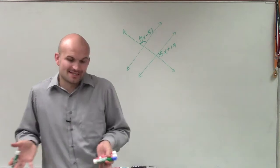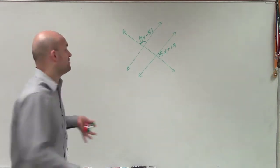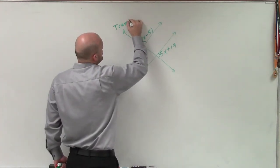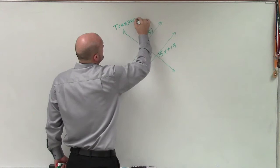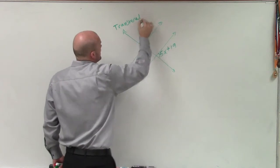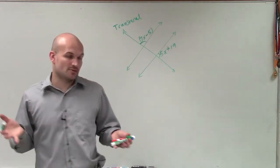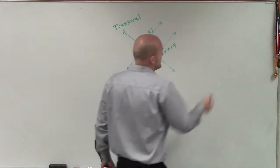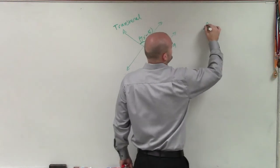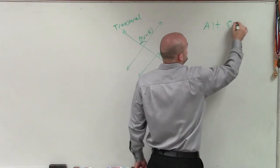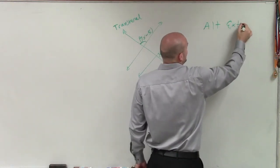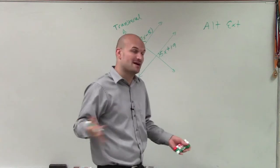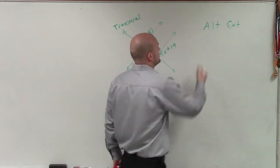I have two lines that are being intersected by a transversal. To prove that they are parallel — because they don't tell us they're parallel — I need to use one of our converse theorems, which would be alternate exterior angles. If alternate exterior angles are equal in measure, then we know we have parallel lines.